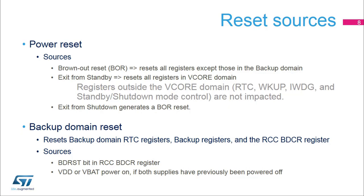The third type of reset is the backup domain reset, which resets the RTC registers, the backup registers, and the RCC backup domain control register. This reset occurs when the BDRST bit is set in the RCC backup domain control register. It also occurs when VDD and VBAT are powered on if both supplies have previously been powered off.